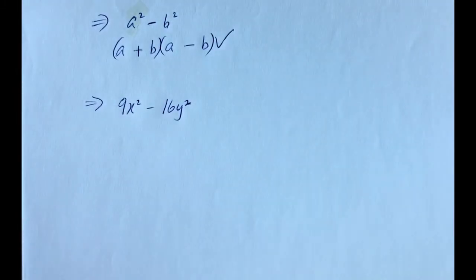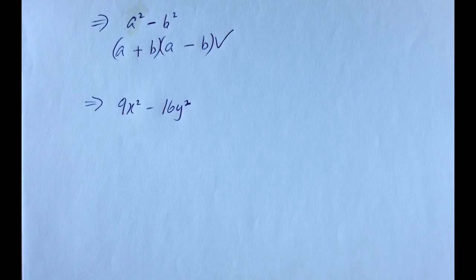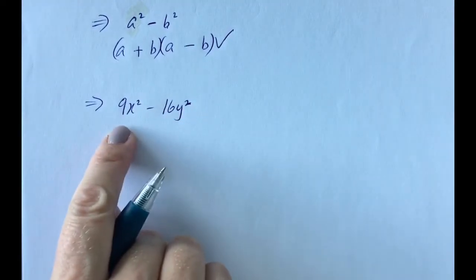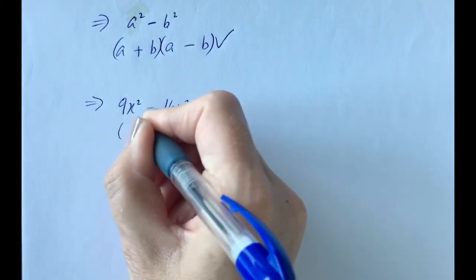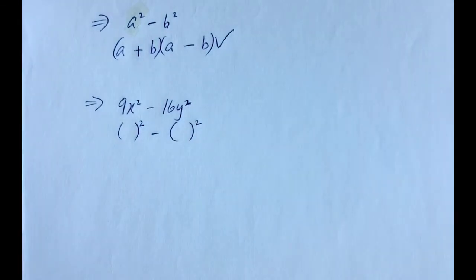Pause the video if you feel confident to give this next one a go. There's not much working out with these — spotting that you have the difference of two squares is key, then you can open your brackets and put in the values. For something a bit more complicated, consider what is actually being squared. You want to be sure you do have the difference of two squares; it has to be a square subtract a square, meaning something multiplied by itself gives that result.